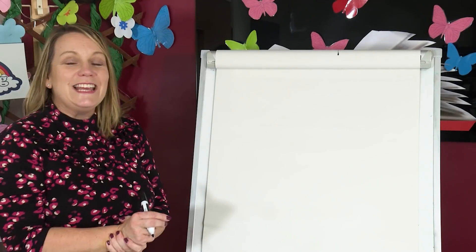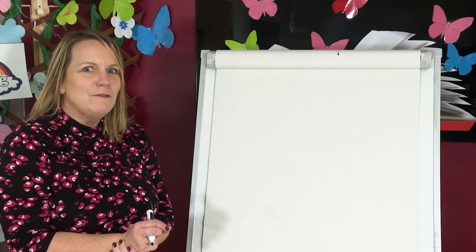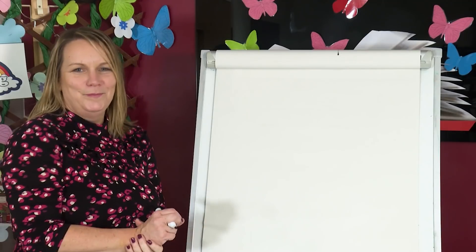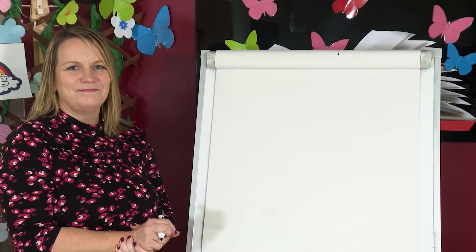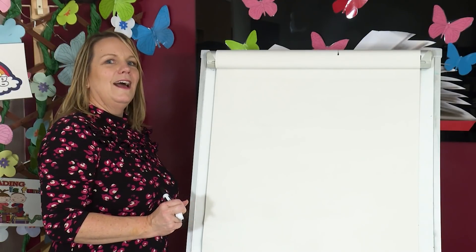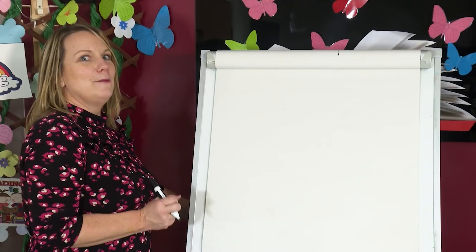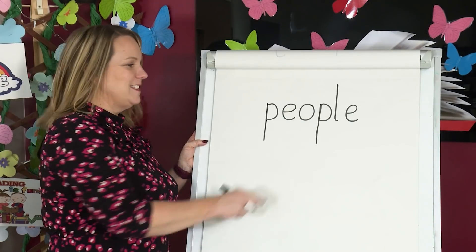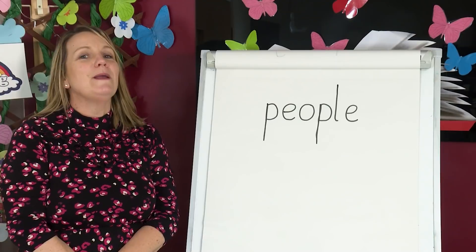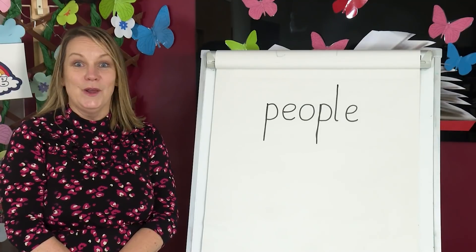You have a go now. Say the word. Say the sounds. Can you remember the tricky bit? Remember, the letters e and o say e. Write it down. Well done. Are you ready to check our spelling? Show me your spelling. Did you get it right? P, e, p, o — people. Well done, children. You've been brilliant today. You worked so hard practising reading and spelling. See you soon for another lesson with Letters and Sounds.